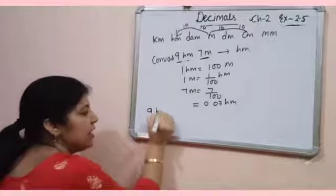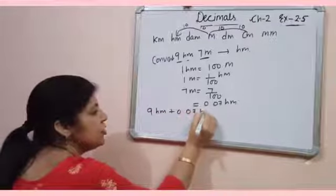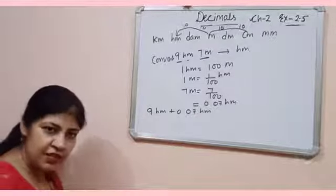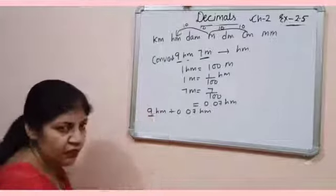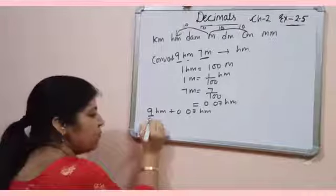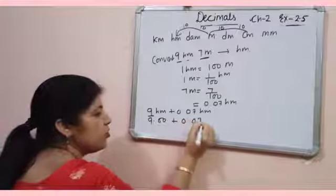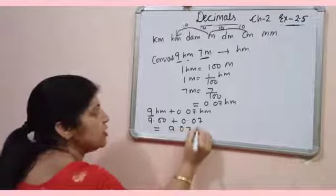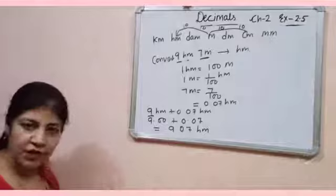Now add 9 hectometer and 0.07 hectometer. And always add same place values. Now 9 is at 1's place. So you have to make them like 9.00, 0.07. Then it will be 9.07 hectometer. Is that clear?